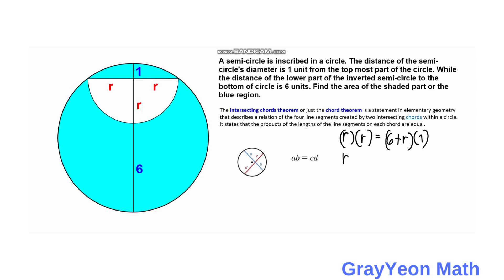Then you have R squared is equal to 6 plus R. Then if you put the two terms on the right side to the left, then you have R squared minus R minus 6 equals 0.